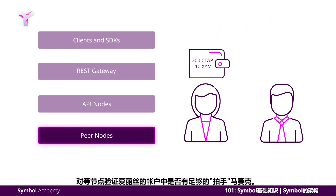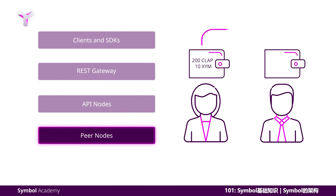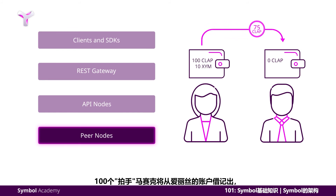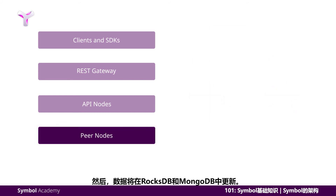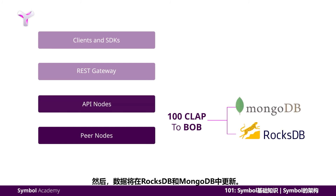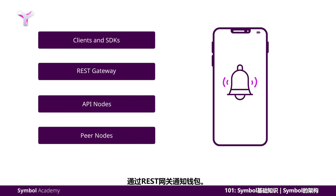The peer nodes validate if Alice has enough of the clap mosaic in her account. If there is, then the transaction is processed. The 100 clap mosaics will be debited from Alice's account and credited to Bob's account. In addition to the 100 clap mosaics, a transaction fee will also be deducted from Alice's account and rewarded to the validator for processing the transaction. The data will then be updated in RocksDB and MongoDB. The wallet app will be notified via REST gateway. The transaction is now considered confirmed.